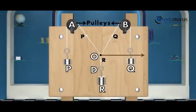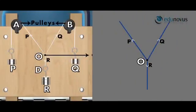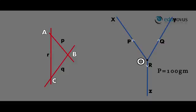Here, P, Q and R are three coplanar forces acting at point O. By drawing lines parallel to the forces OP, OQ and OR, a triangle ABC is formed. The sides of the triangle ABC, which are P, Q and R, represent the forces OP, OQ and OR. Here, the force P is equal to 100 grams, Q is equal to 100 grams, and R is equal to 150 grams.